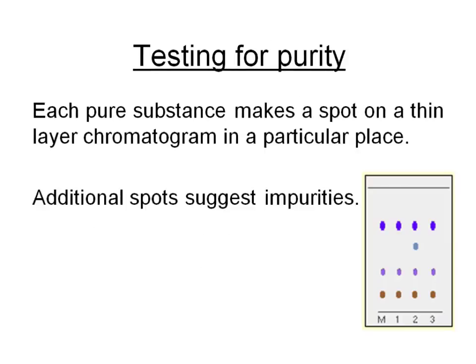A second method of testing for purity is to run a chromatogram — to use chromatography. Any additional spots suggest impurities. Here, material M has a particular pattern of three spots. Samples 1 and 3, having the same spot pattern as M, are just as pure. But sample 2 would not be used because it has an additional spot, which suggests an impurity.